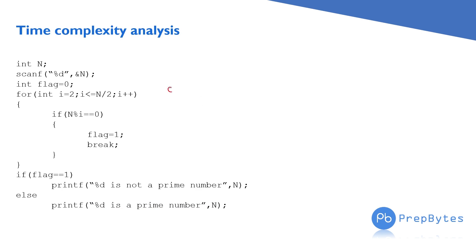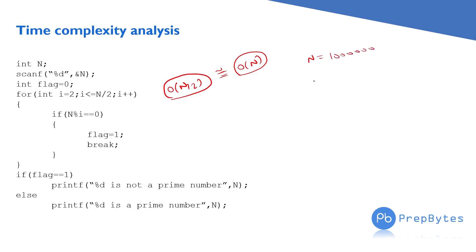Time complexity analysis: the loop runs n/2 times, which is O(n/2). But asymptotically, O(n/2) equals O(n). So we came back to O(n). For large values of n — for example n ≈ 10^6 — n/2 is 500,000, so there is not much practical difference compared to n.